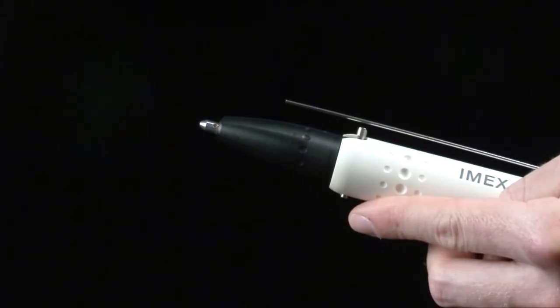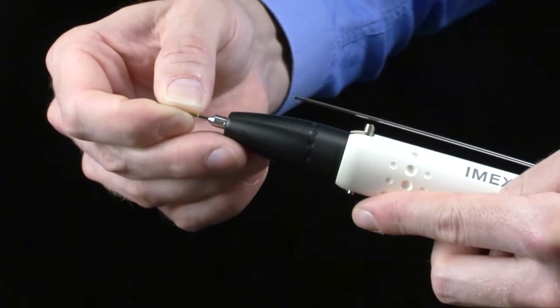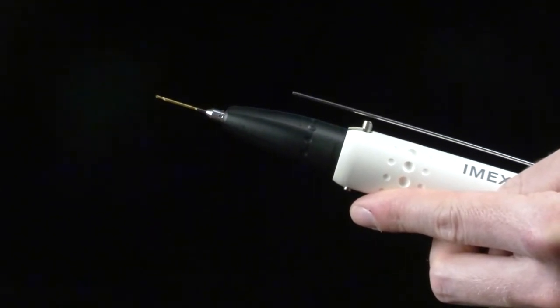Select a 1.15 mm drill bit and load it into the micro drill by aligning the taper of the drill bit shaft with the offset pin in the chuck.